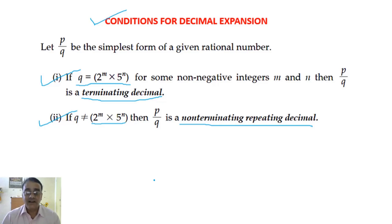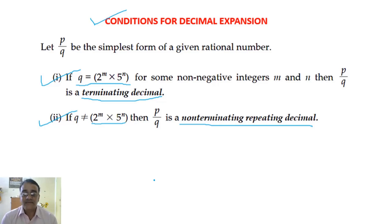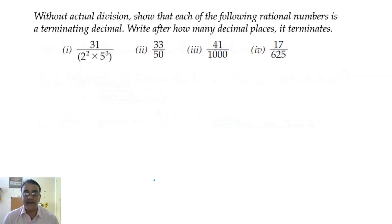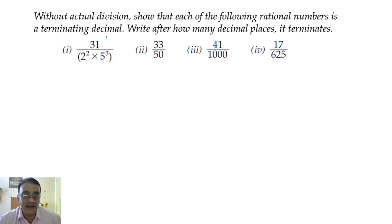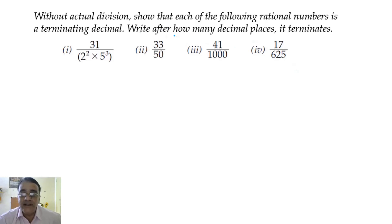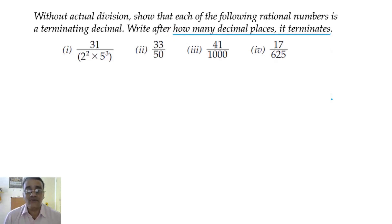Now let us move towards the next type of question — how to check, how to verify, and how to find the number of decimal places. Without actual division, show that each of the following rational numbers is a terminating decimal, and after how many decimal places it terminates. We will see one by one. First, we are going to take 31 upon 2² × 5³.